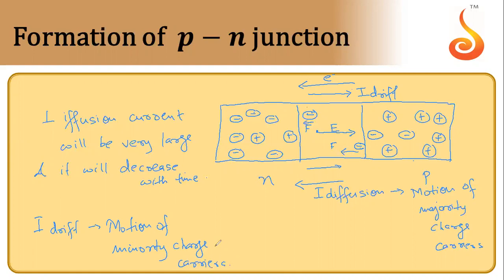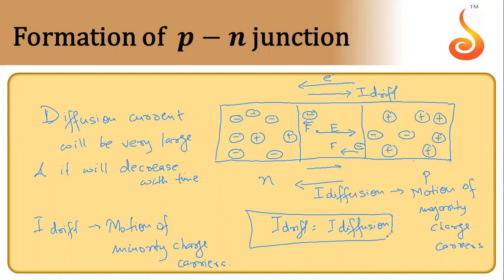Initially the diffusion current is very large and it decreases with time. As the electric field grows stronger, there will be more force on the electrons, and drift current will start increasing. After a certain time, drift current will become equal to diffusion current, and at that point equilibrium will be established. At that time this region will have attained a certain thickness.